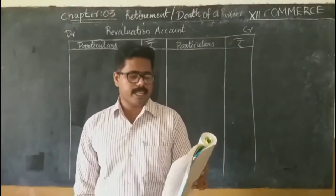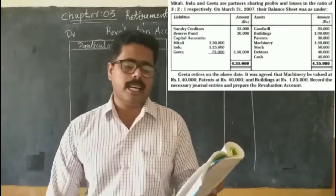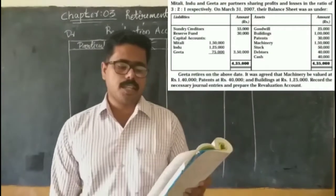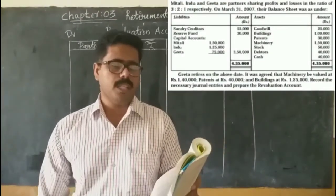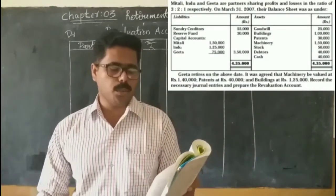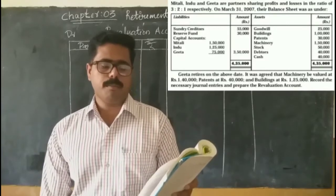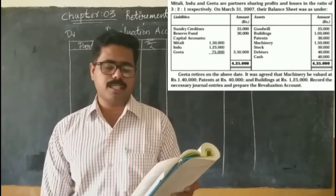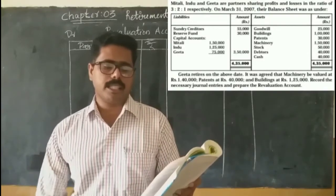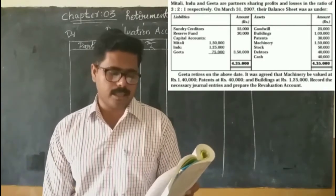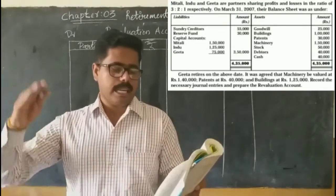Let us discuss a small question. Mithali, Hindu, and Gita are partners sharing profits and losses in the ratio of 3:2:1 respectively. On March 31st, 2012, their balance sheet is given, with items such as creditors, reserve fund, capitals, goodwill, building, patent, machinery, stock, debtors, and cash.